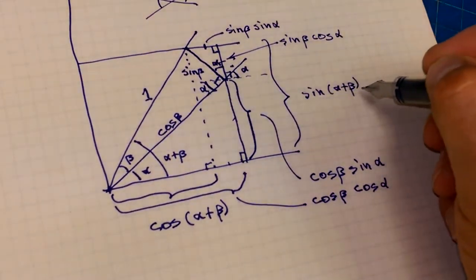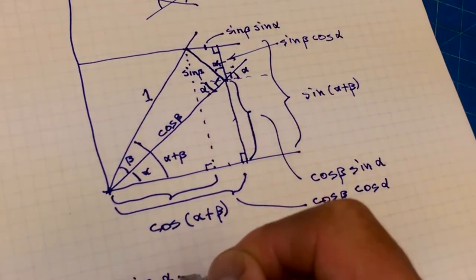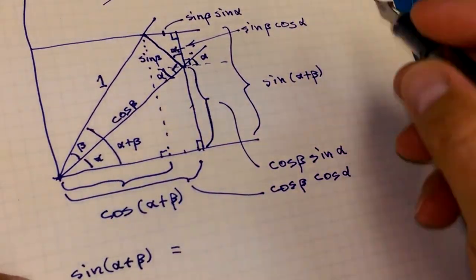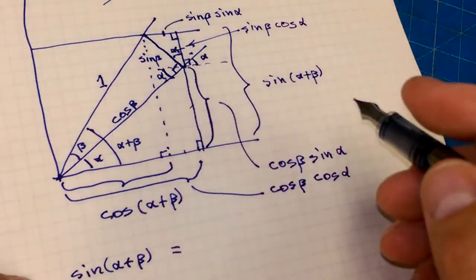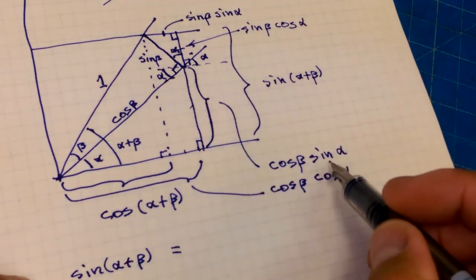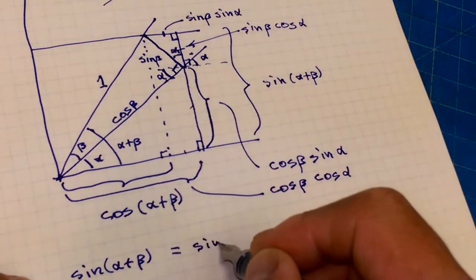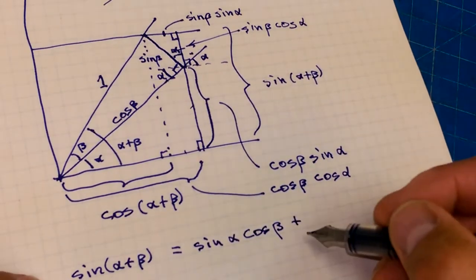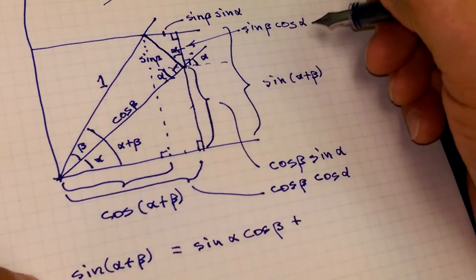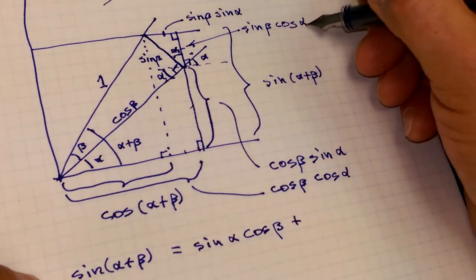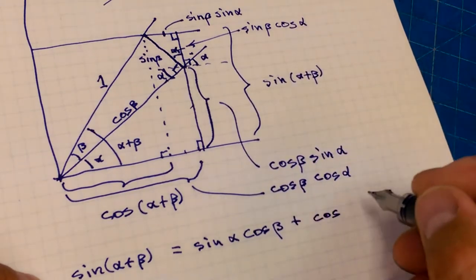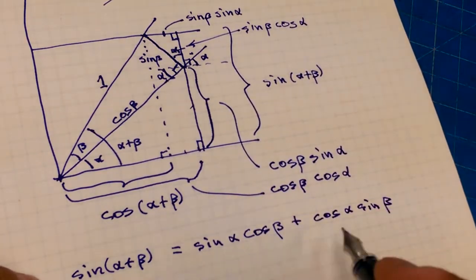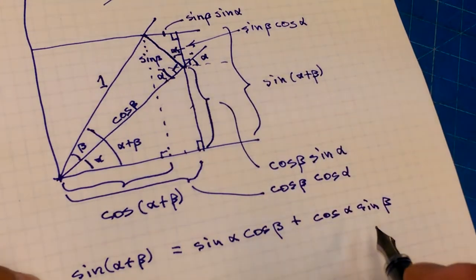So sine of alpha plus beta equals sine alpha cos beta plus cos alpha sine beta. Let me write those in consistent order: sine alpha cos beta plus cos alpha sine beta. So: sine cos, cosine sine — that gets us one of our identities. It doesn't really matter what order these come in; people put them in different orders to help remember them. But if you can just draw this little diagram, it lets you figure things out.